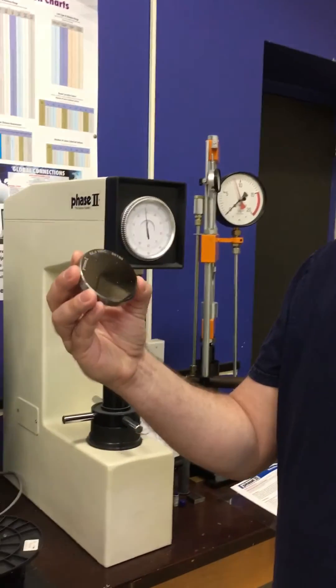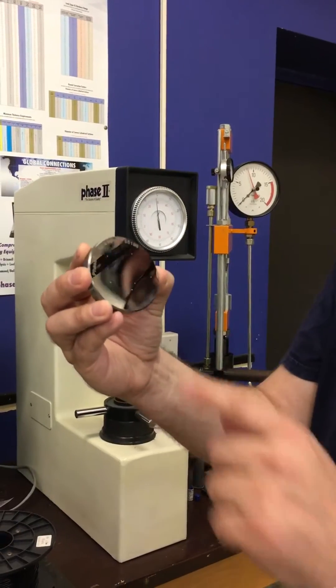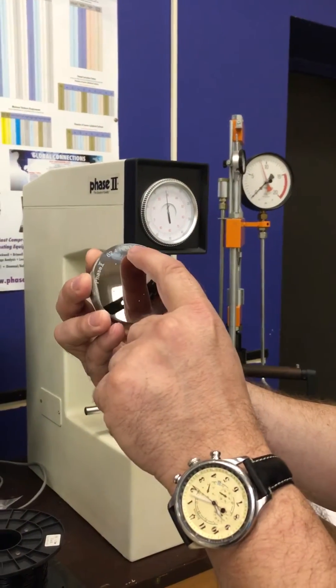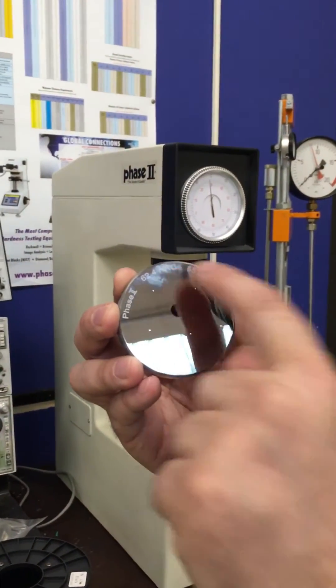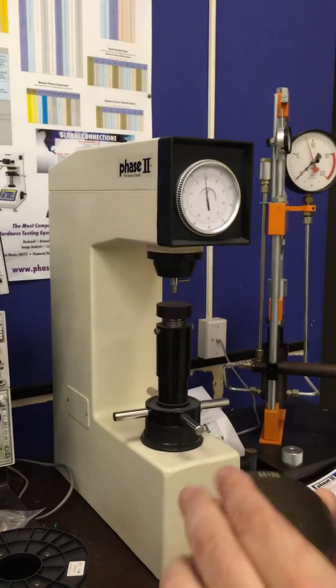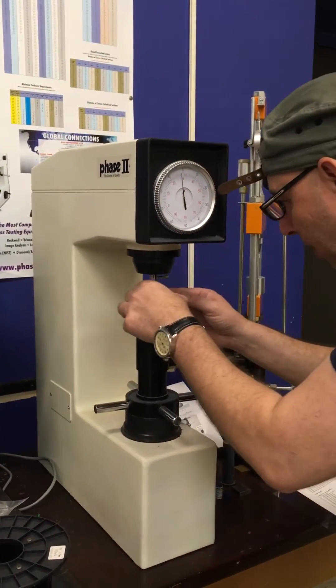So, to calibrate, you get a sample, a C sample, which is indicated here on this piece that says HRC. That's a C sample. And you place it upon the anvil.